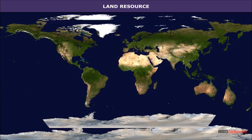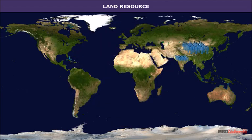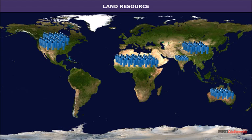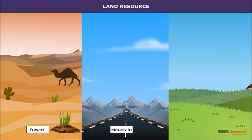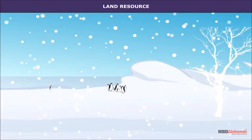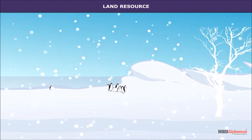Land constitutes only about 30% of the total area of the earth. The entire human population of more than 6 billion people lives today on land. Of this total population, 90% of people live on 30% of the land area. The remaining 10% also live on land but in inhospitable parts like deserts, mountains, grasslands and in extremely cold areas. These areas are sparsely populated.